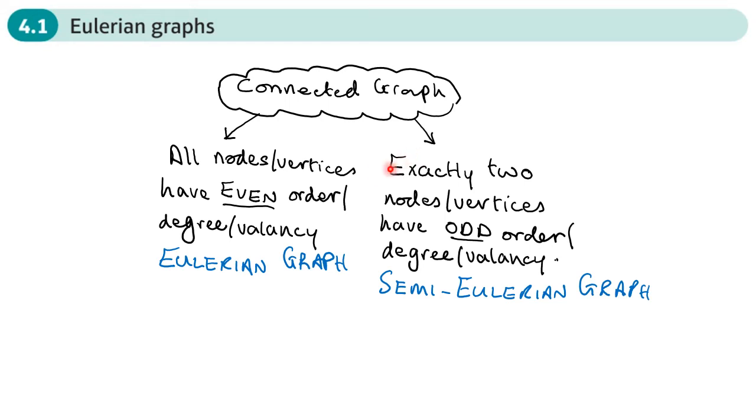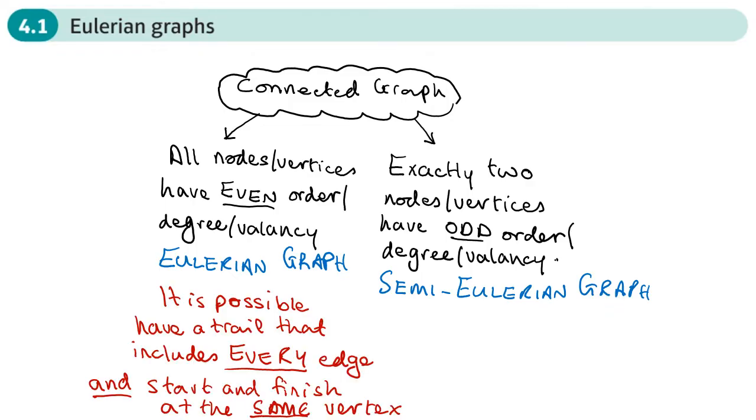If, however, exactly two of the nodes or vertices have odd order, degree or valency, then it's known as a semi-Eulerian graph. Now, if a graph is Eulerian, then it is possible to have a trail that includes every edge, and that trail starts and finishes at the same vertex.